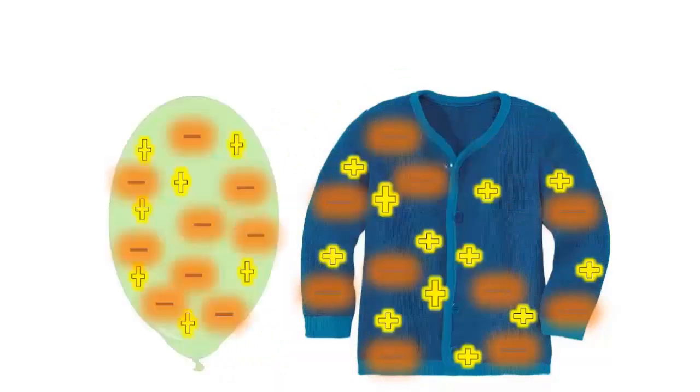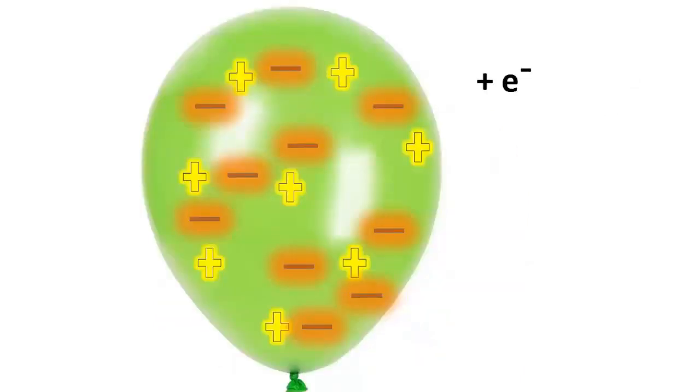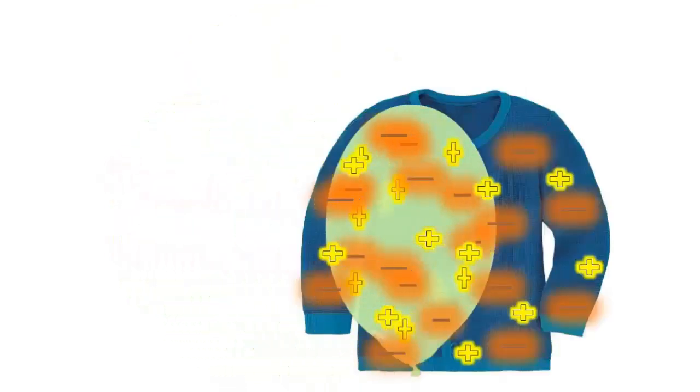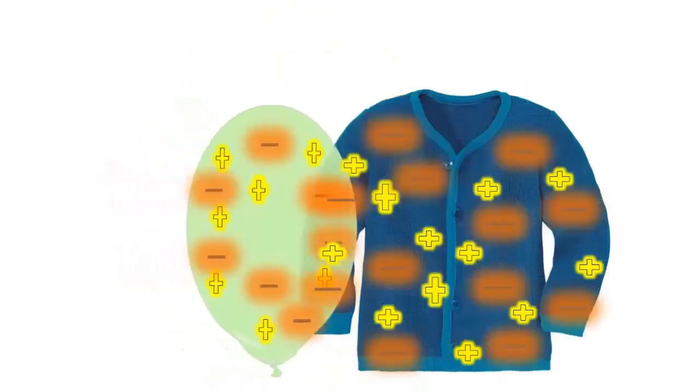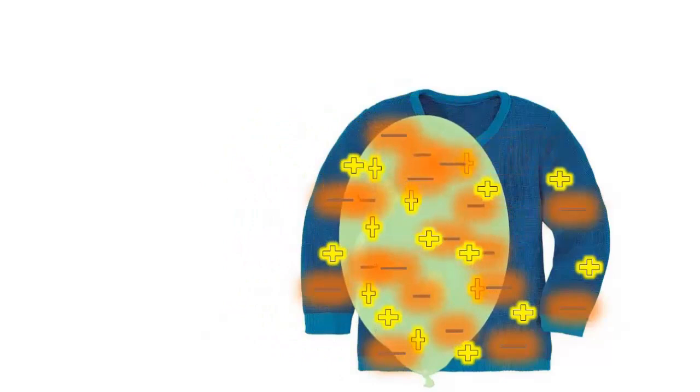Since the shirt loses electrons, it becomes positively charged. And the balloon receives more electrons and becomes negatively charged. When two materials are rubbed together, some electrons may be transferred from one material to the other. This is called charging by friction.